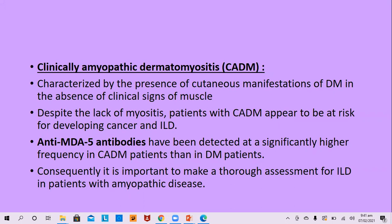Clinically amyopathic dermatomyositis, including both amyopathic and hypomyopathic forms, is characterized by presence of cutaneous manifestations and absence of clinical signs of muscle involvement. Despite the lack of muscle myositis, patients are at risk of developing cancer and inflammatory lung disease. Anti-MDA5 antibodies are found at higher frequency in clinically amyopathic dermatomyositis patients, making it important to assess inflammatory lung disease thoroughly.